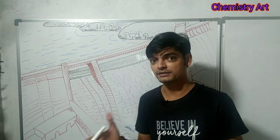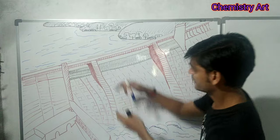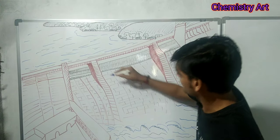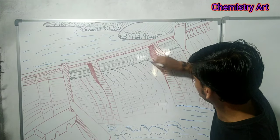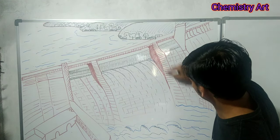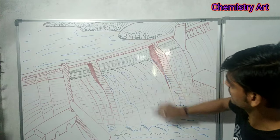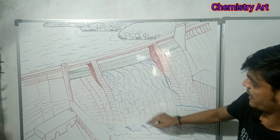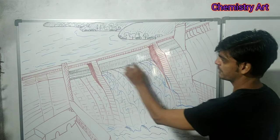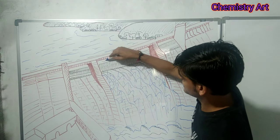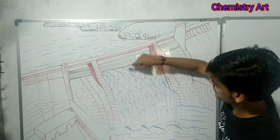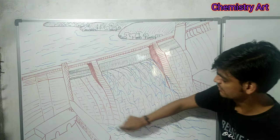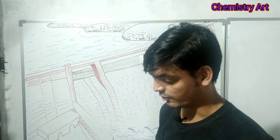Now let me explain how one lakh cusack of water flows. When the floodgates of the dam are opened, water comes out in this way. This is not a small quantity of water. The water from the back side comes out through the gate and continues into the river.